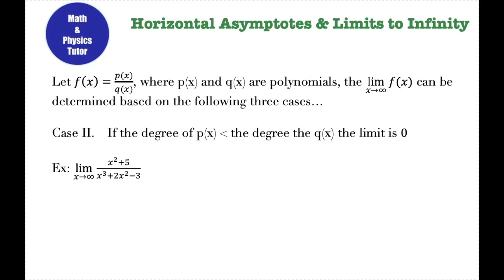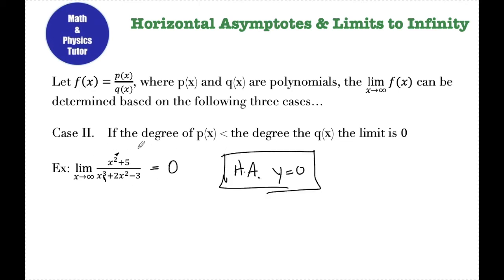Let's look at case two: a function where the degree of p(x) is less than the degree of q(x). So the numerator's degree — in this case, two — is less than the degree of the denominator, three. If the degree of the denominator is greater, that means the denominator is getting bigger faster than the numerator. You could think of it as something like one-fourth, one-tenth, one-one-hundredth, one-one-thousandth — those numbers are getting closer and closer to zero. So whenever the degree of the denominator is greater than the degree of the numerator, the limit is going to be zero. Since this function is getting dragged down to zero, there is a horizontal asymptote at y equals zero. If the degree of the denominator is greater than the degree of the numerator, the limit is zero and the horizontal asymptote is y equals zero.